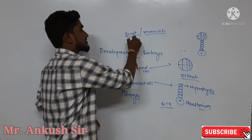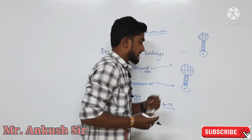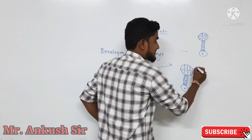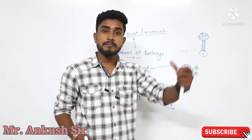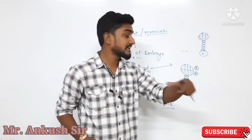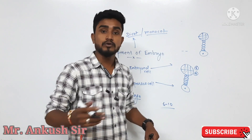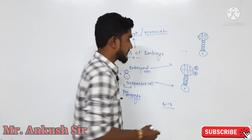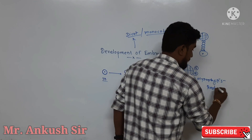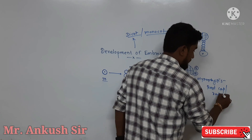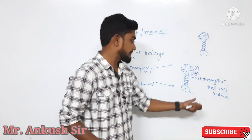Development of embryo goes in a different direction. There are 4 cells in the upper part and cells in the lower part. The upper part of the plant becomes the shoot system — like stem and leaves. The lower part corresponds to the root system, the radicle part. The hypophysis gives rise to the root cap and radicle part.